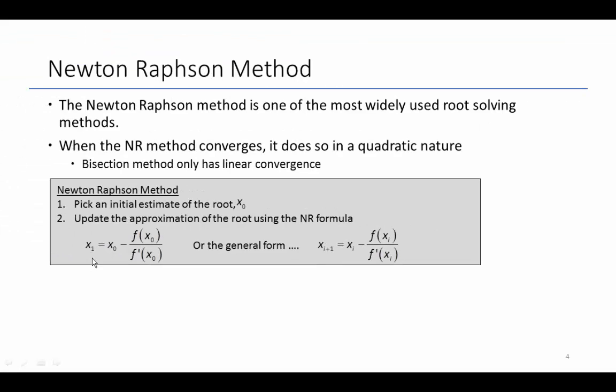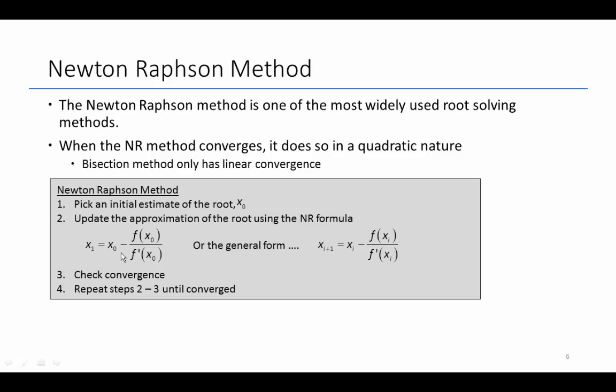For our first root, we take the initial guess, subtract the function at the initial guess over the derivative, and get a new updated value. Then we check convergence by comparing the error between iteration one and our initial guess. We would repeat steps two through three until we reach a converged solution.